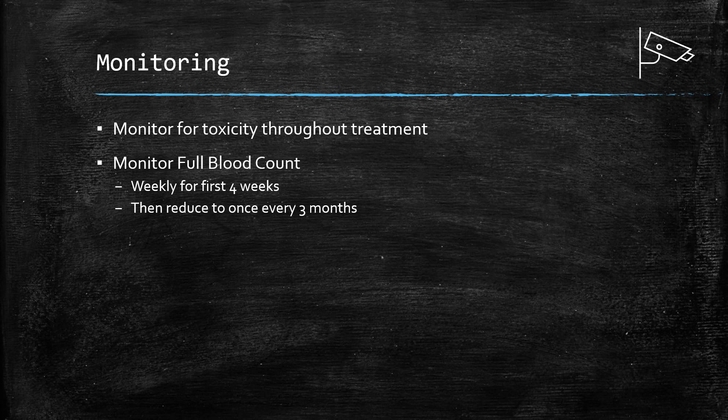Full blood count is the main thing, and symptoms to watch for include fatigue, pale skin, faster heart rate, easy tiring on exertion, dizziness, shortness of breath, easy bleeding, bruising, and infections. It's also important to mention LFTs - liver function tests - because there's a risk of cirrhosis in theory with azathioprine, so it's always worth checking.